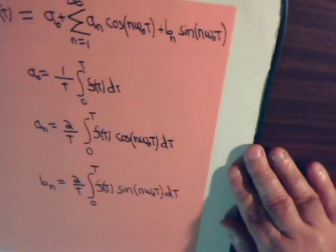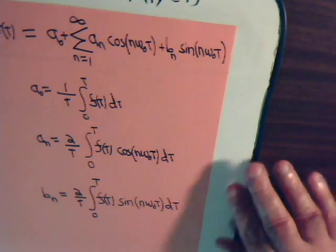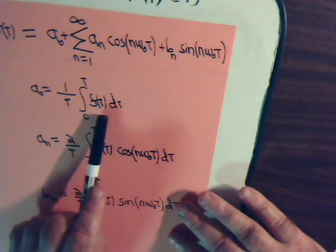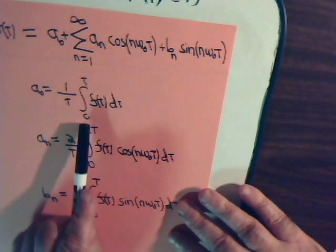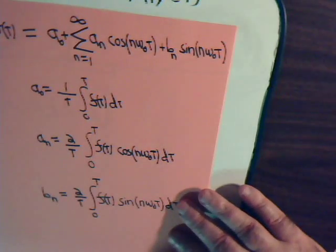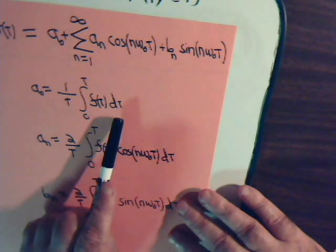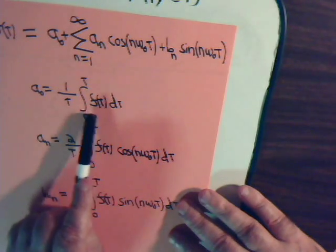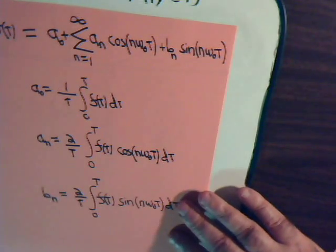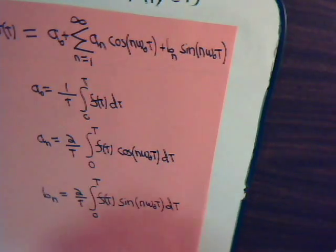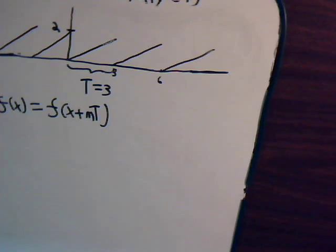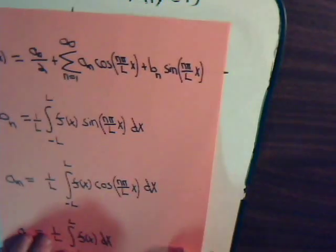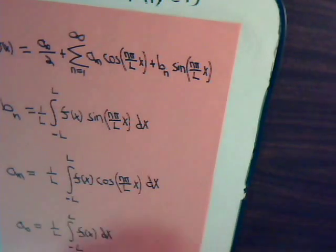And this constant here a_naught we can think of as sort of like the average value of the function. We're integrating it over its entire range over its period and then whatever value that integral is equal to we're dividing it by the period.